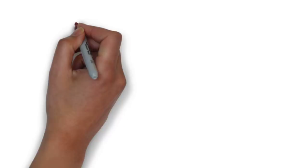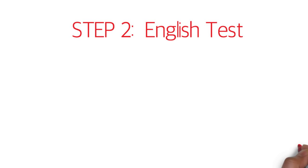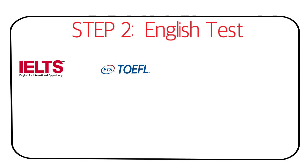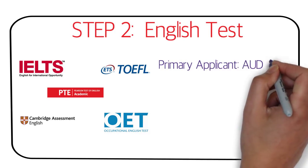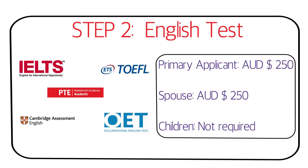Step two is the English test. There are five different tests you can choose from: IELTS, TOEFL iBT, PTE Academic, Cambridge Assessment English, or the Occupational English Test. I checked almost all of these and the cost is almost the same across them, though it may differ slightly from one country to another. All costs are listed in Australian dollars. For the primary applicant it would cost around AUD $250, and the same amount applies for a spouse. Children are not required to take the English test.